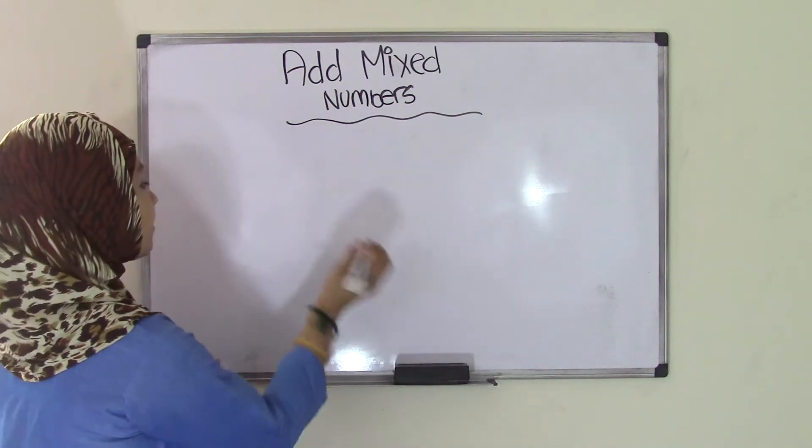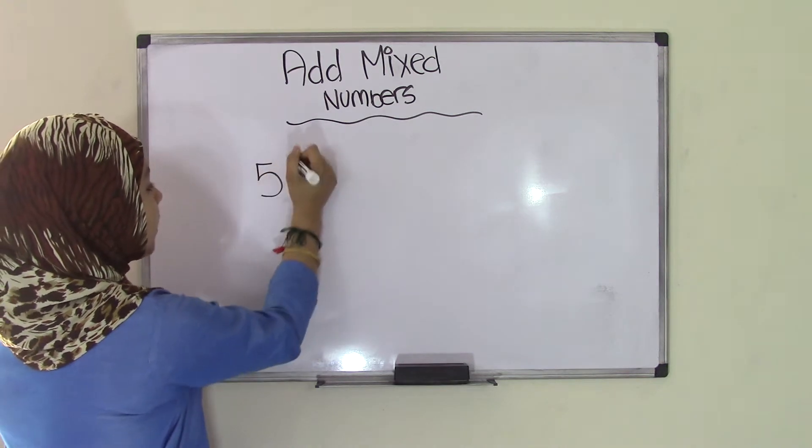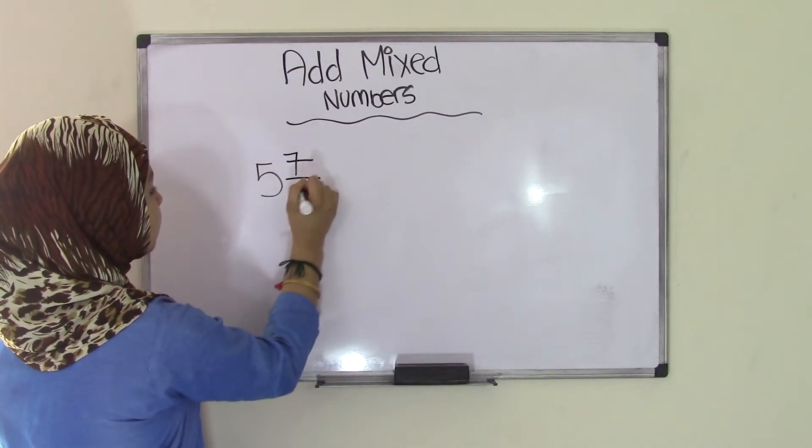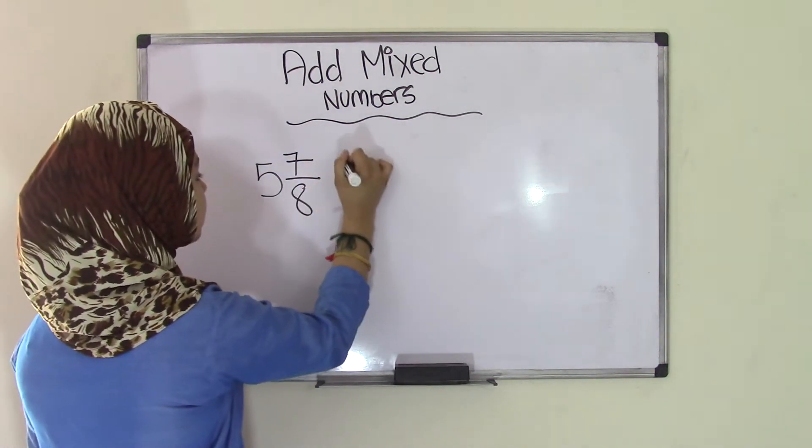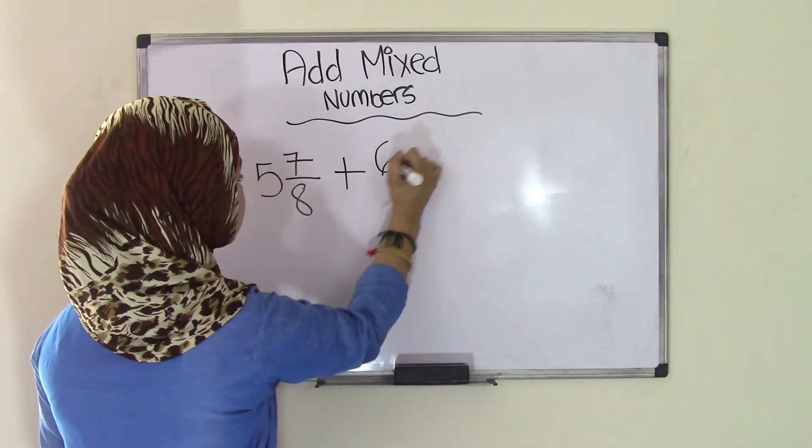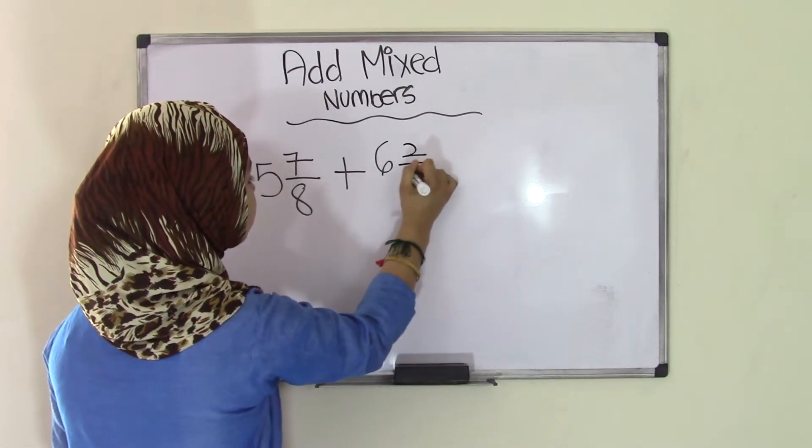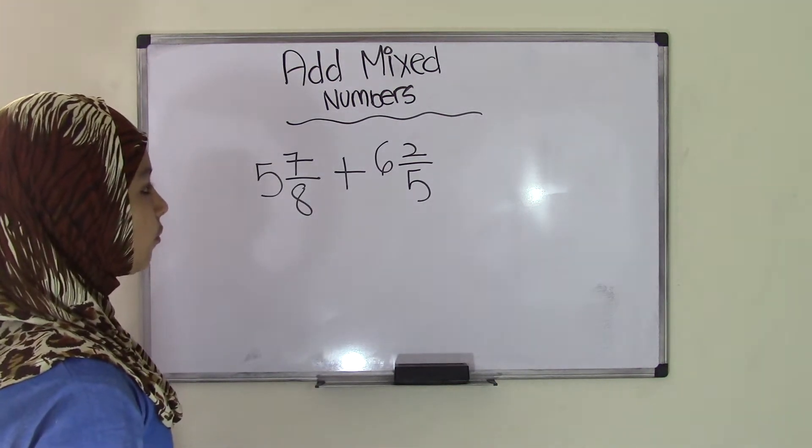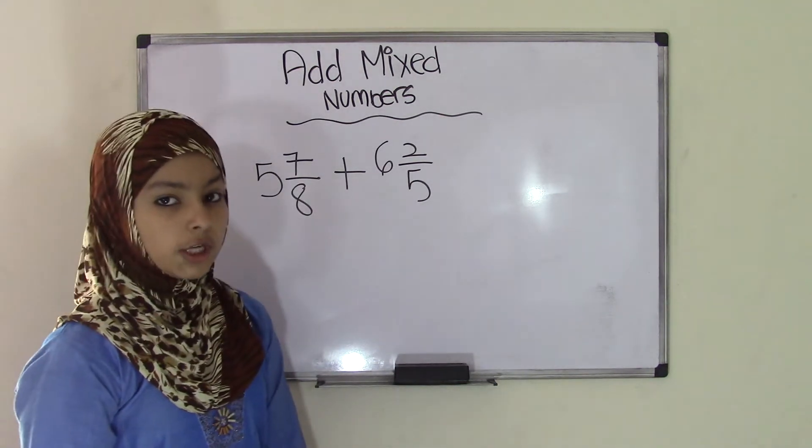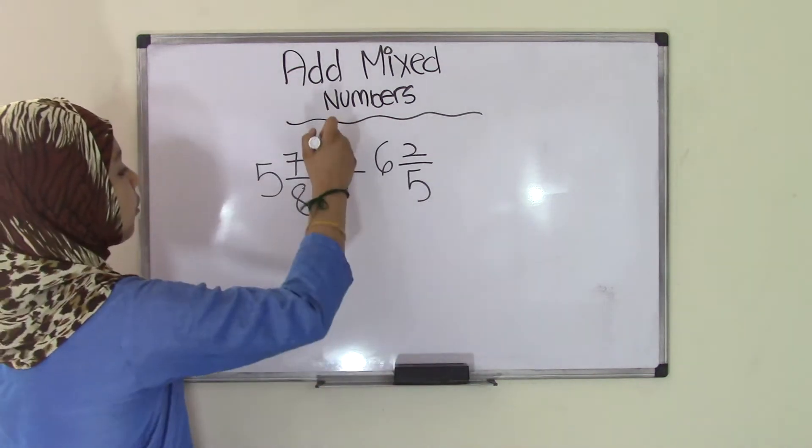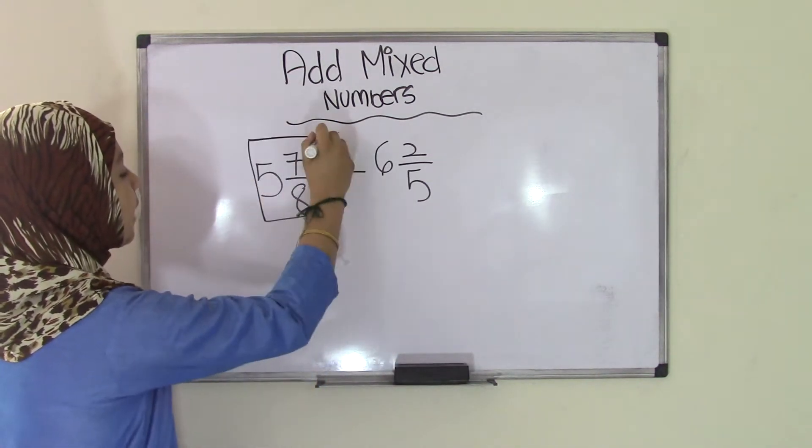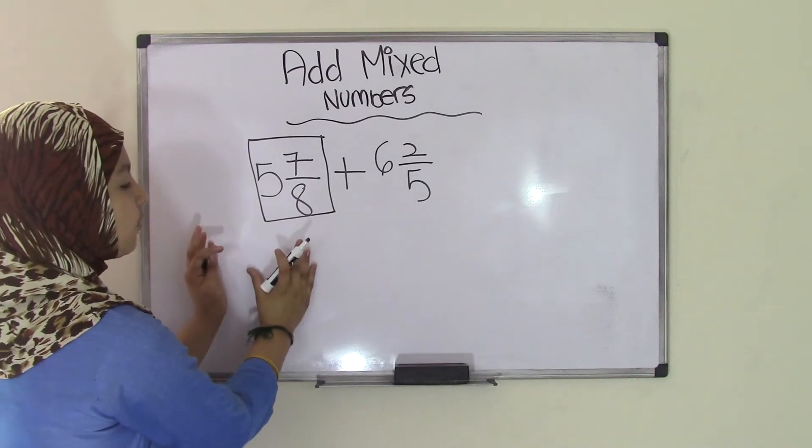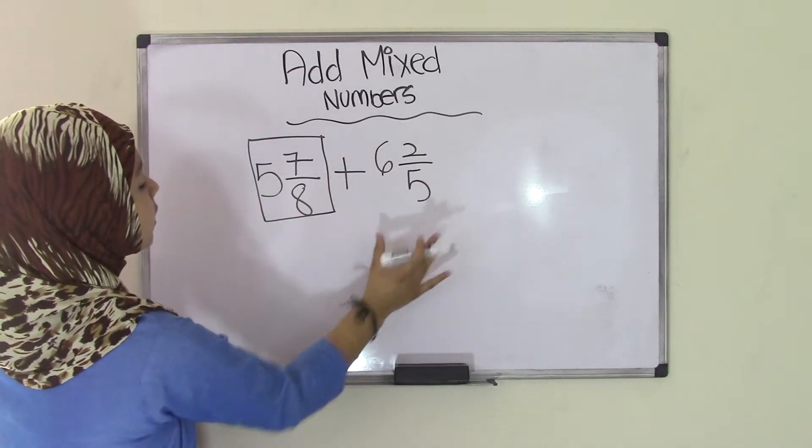So let's say we have a problem such as 5 7/8 plus 6 2/5. That's our problem, 5 7/8 plus 6 2/5. Remember that you need to change this into improper fractions first. So if you look at your mixed number over here, 5 7/8, first we're going to do 5 7/8, then we're going to move to 6 2/5.